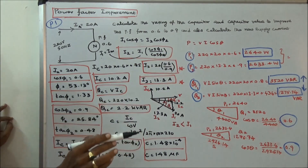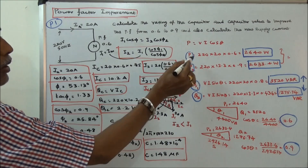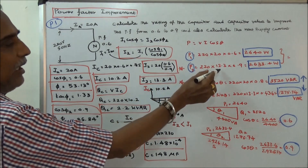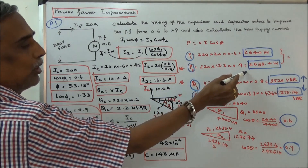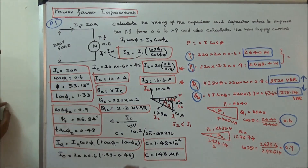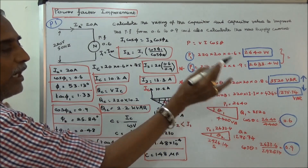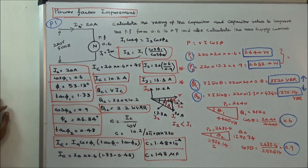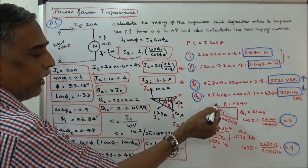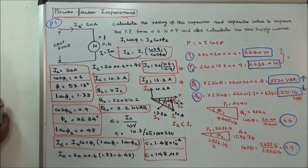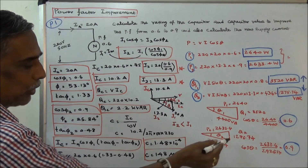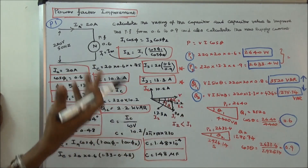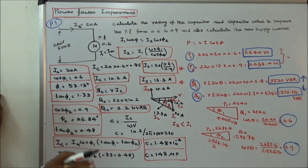Real power P = V × I × cos θ. Case 1: P1 = 220 × 20 × 0.6 = 2640 W. Case 2: P2 = 220 × 13.3 × 0.9 = 2633.4 W — almost equal. Reactive power Q1 = V × I × sin θ = 3520 VAR. Q2 = 1027.74 VAR. The power triangle shows that by controlling the reactive power, we can control and improve the power factor.